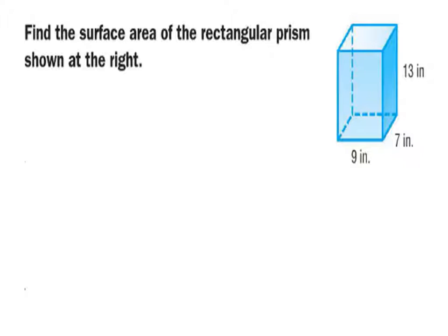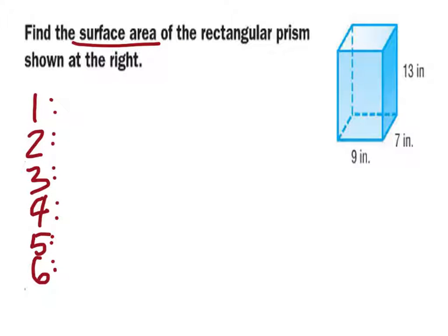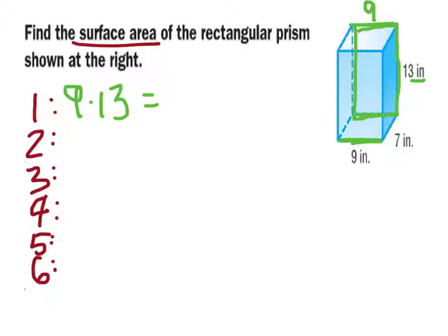I'm going to do this next one the same way — taking each of the six sides and adding them together in the end. Let's start with the back surface. We can see one dimension is 13, and the length corresponds to this front length of 9 inches, so we label it 9. You have a 9 by 13 rectangle, which gives us a surface area of 117 square inches.